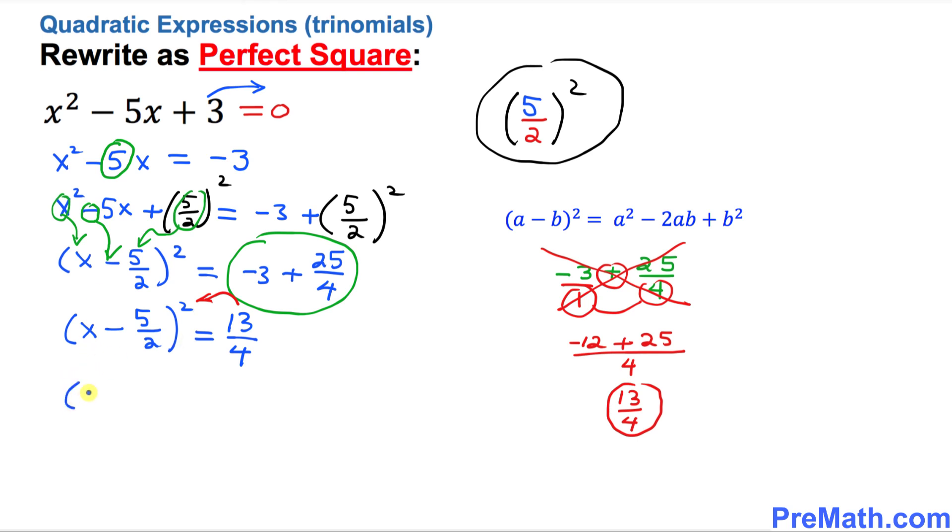this is going to simply become x minus 5 over 2 square. And when you move it on the other side, it becomes negative 13 over 4 equal to 0.